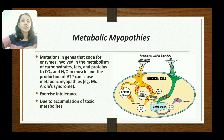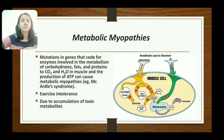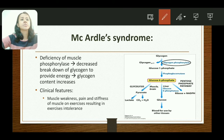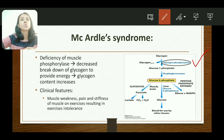Next are metabolic myopathies, where there is mutation in genes coding for enzymes involved in the metabolism of carbohydrates, fats, and proteins — processes that produce ATP. One example is McArdle syndrome, in which there is deficiency of muscle phosphorylase (glycogen phosphorylase). This means breakdown of glycogen to glucose is reduced, so glycogen content increases. The result is muscle weakness, pain, and stiffness during exercise — i.e., exercise intolerance — due to accumulation of toxic metabolites.